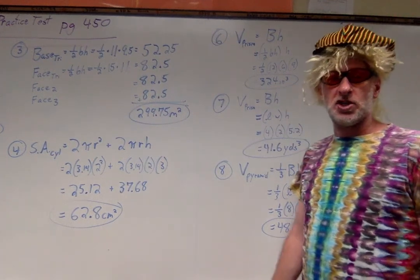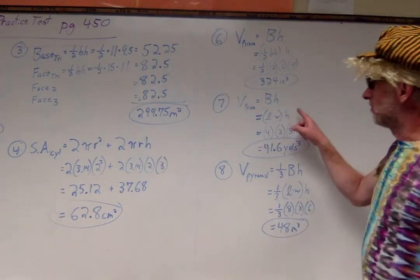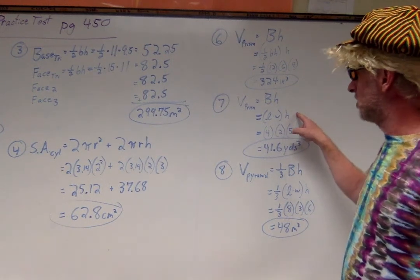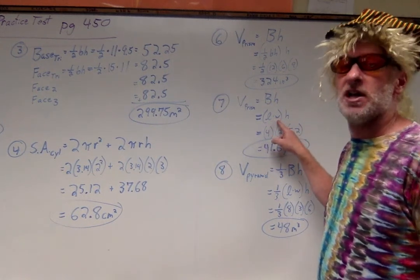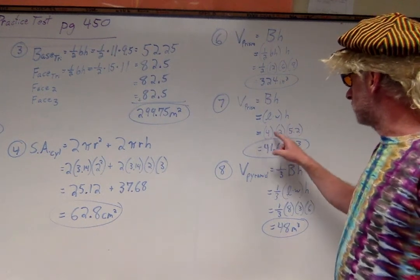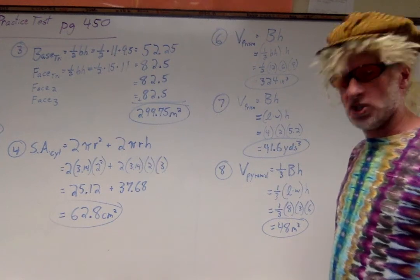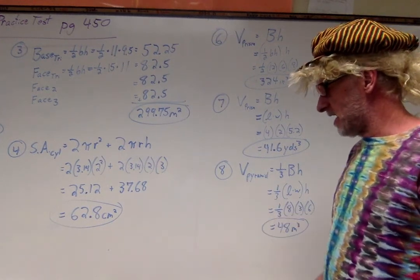Number seven, another volume of a prism. This one was a rectangular prism so it's length times width, 4 times 2 times the 5.2 is 41.6 yards cubed.